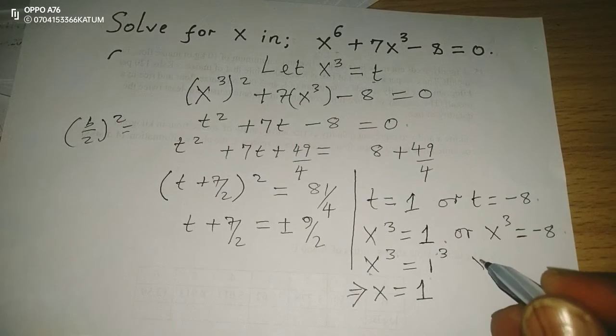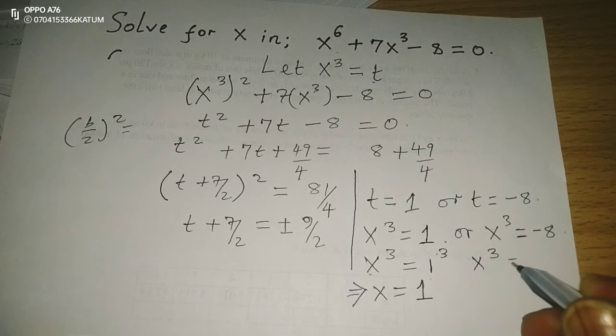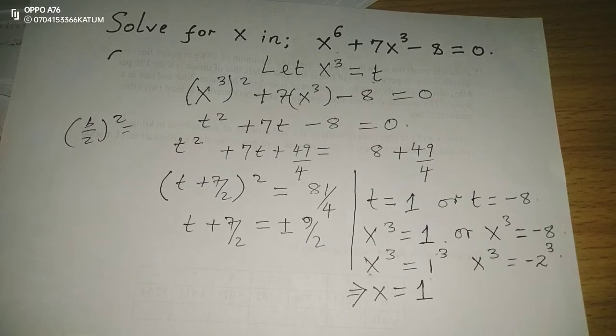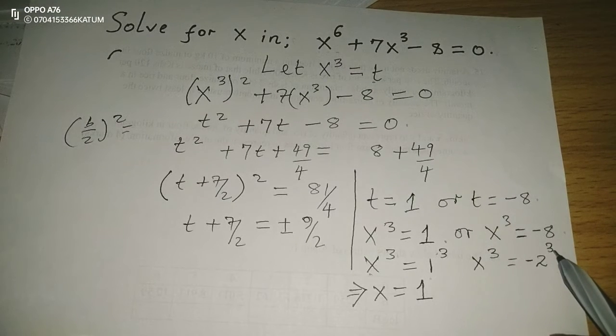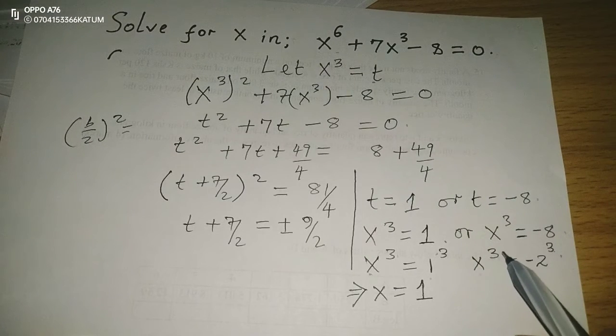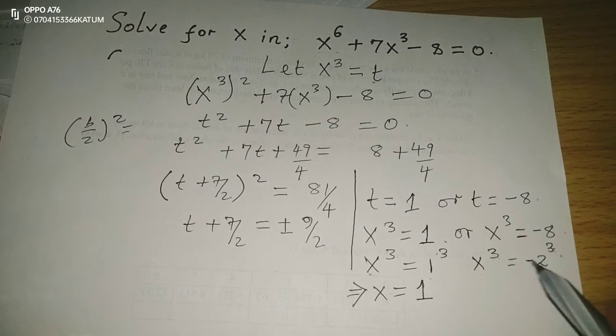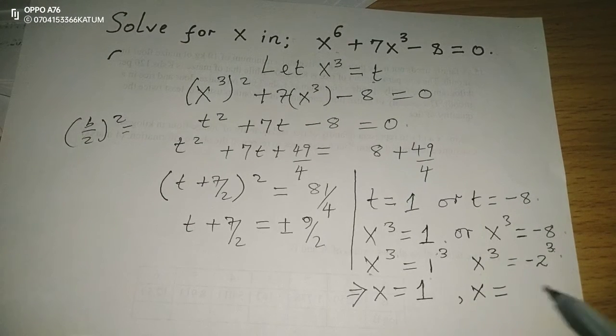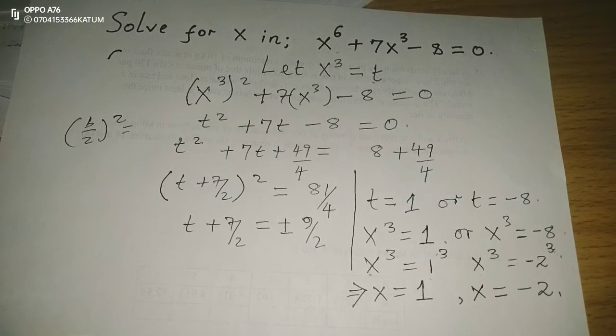On the other side, x^3 equals to negative 2 also to the power 3. If negative 2 to the power 3 is the same as x^3, these powers are the same. Therefore, we can conclude that the value of x is equivalent to negative 2.